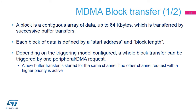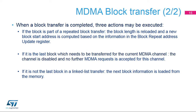A block is a contiguous array of data, up to 64 bytes, which is transferred by successive buffer transfers. Each block of data is defined by the start address and the block length. When a block transfer is completed, one of the following three actions can be executed. If the block is part of a repeated block transfer, the block length is reloaded and a new block start address is computed based on the information in the CXBRUR register. If it is a single block or the last block in a repeated block transfer, the next block information is loaded from memory using the linked list address information from the MDMA-CX-LAR.